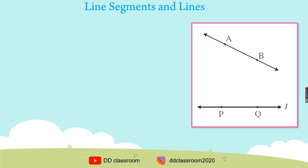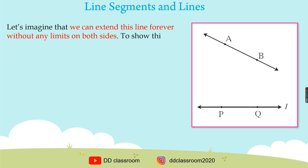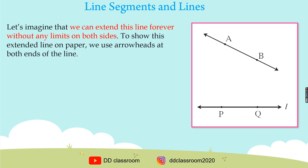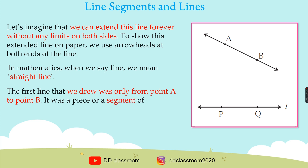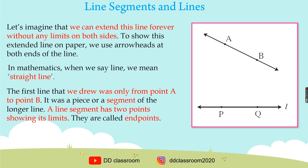See this picture. Let's imagine that we can extend this line forever without any limits on both sides. To show this extended line on paper, we use arrowheads at both ends of the line. In mathematics, when we say line, we mean straight line. The first line that we drew was only from point A to point B — it was a piece or a segment of the longer line. A line segment has two points showing its limits; they are called end points.